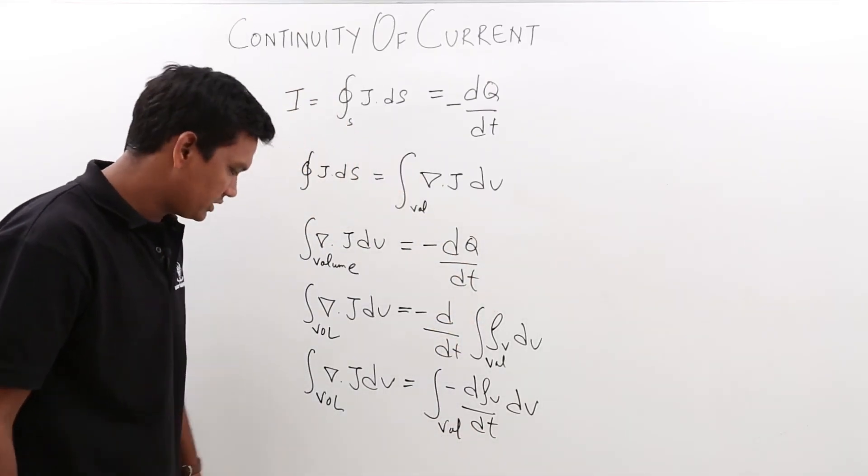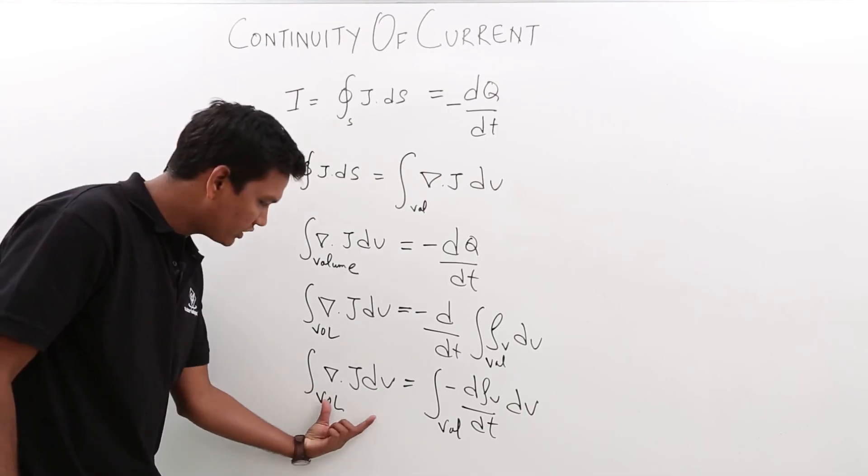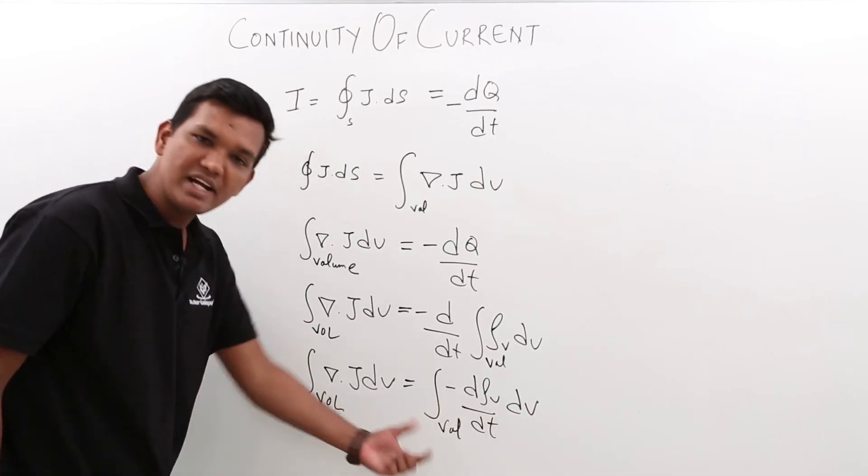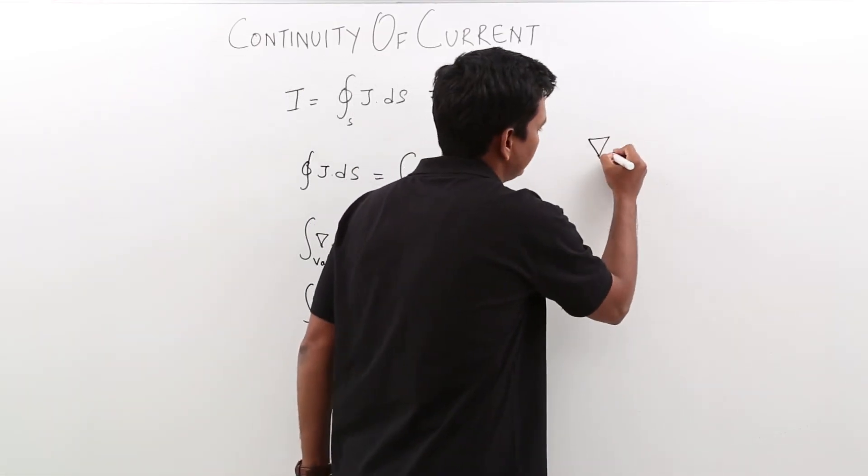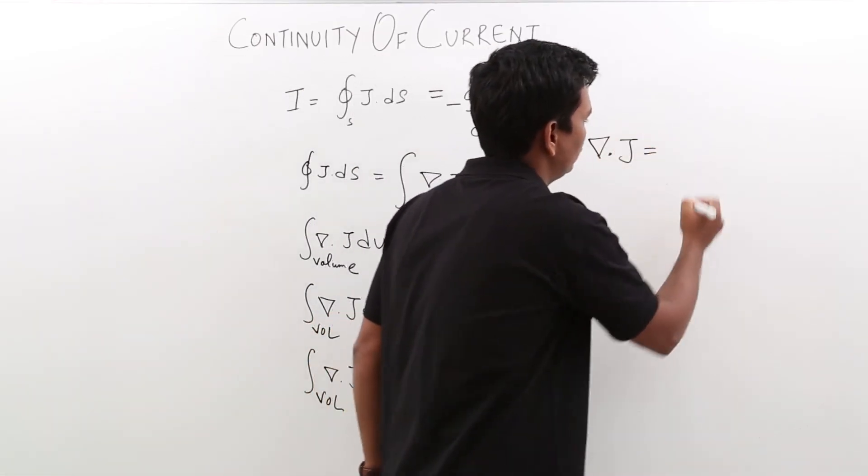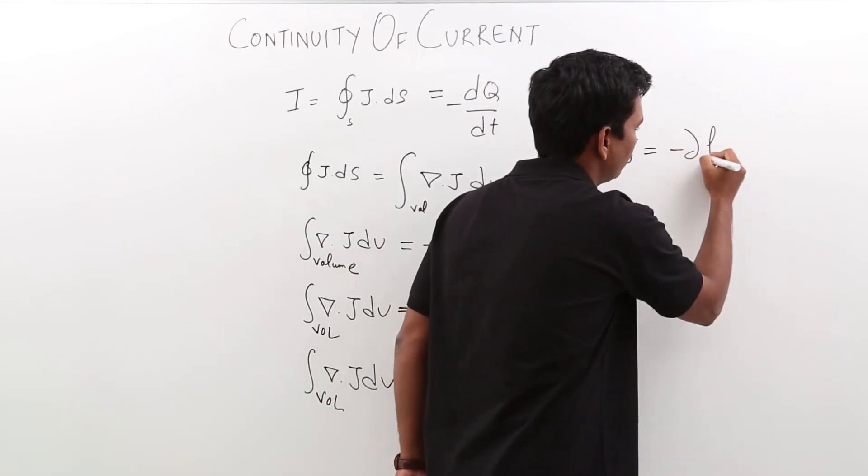When we look at this equation, this is also over the volume, this is also over the volume. So when I compare these two equations, can I say that del dot j is equal to minus d rho v by dt?